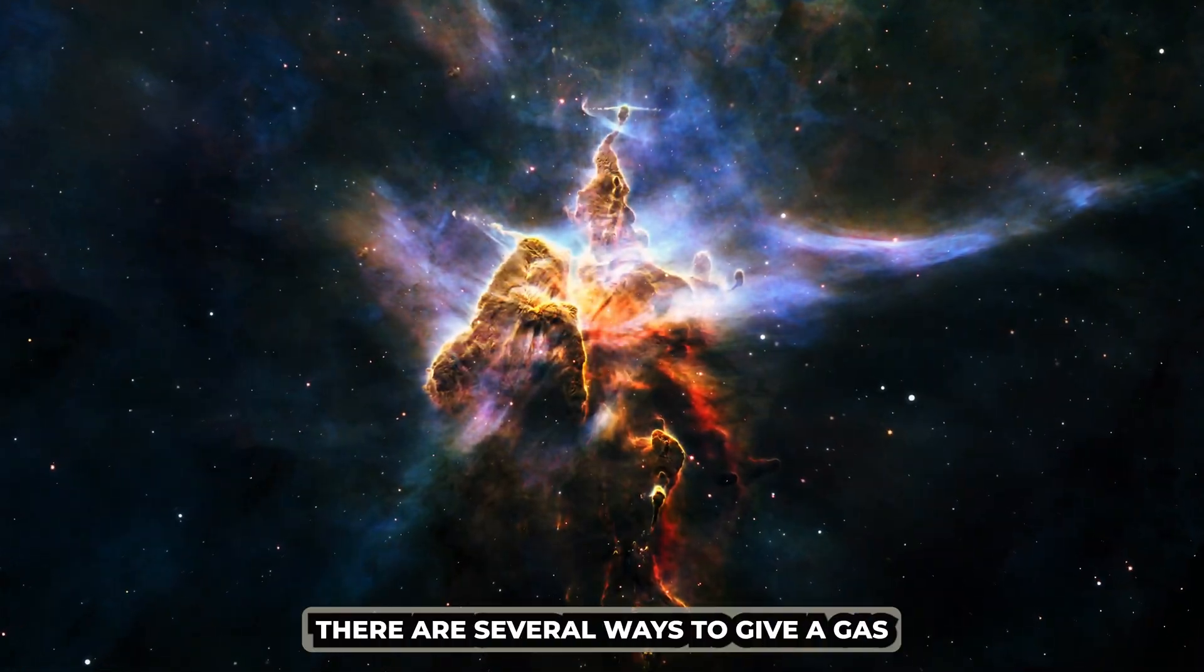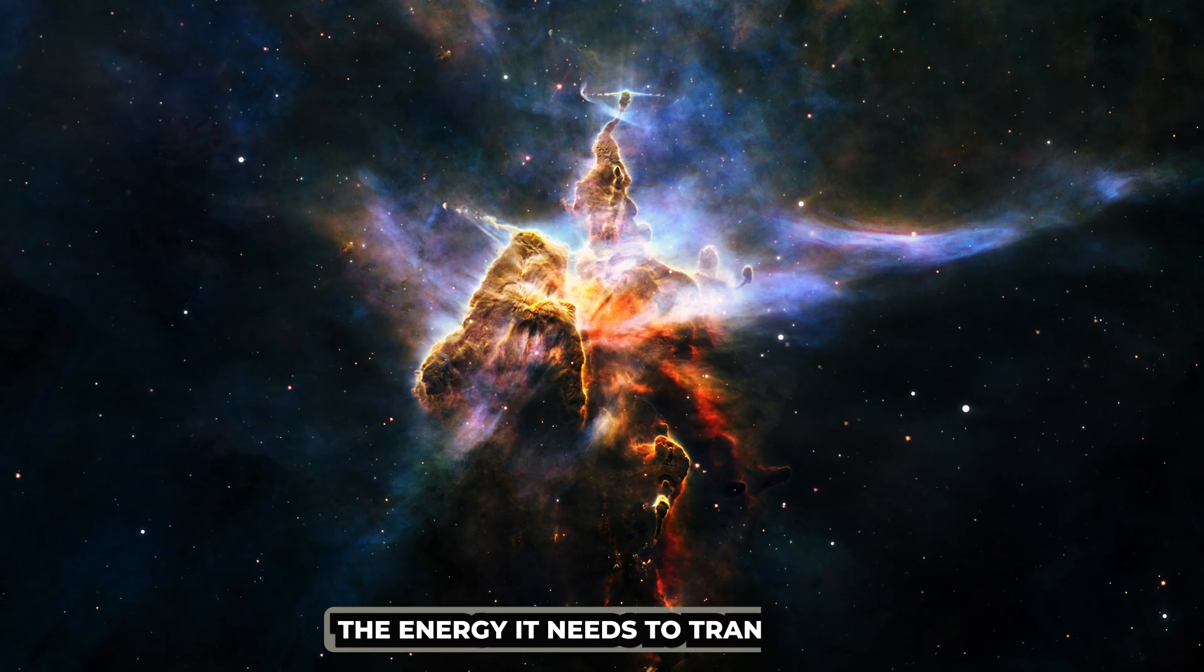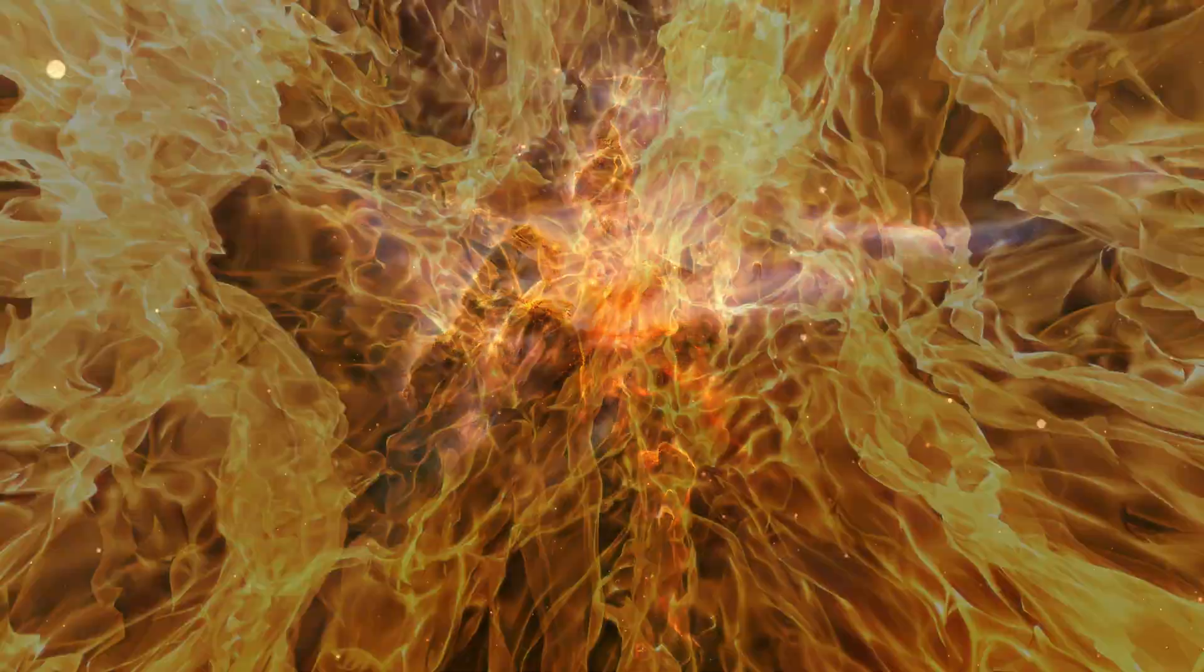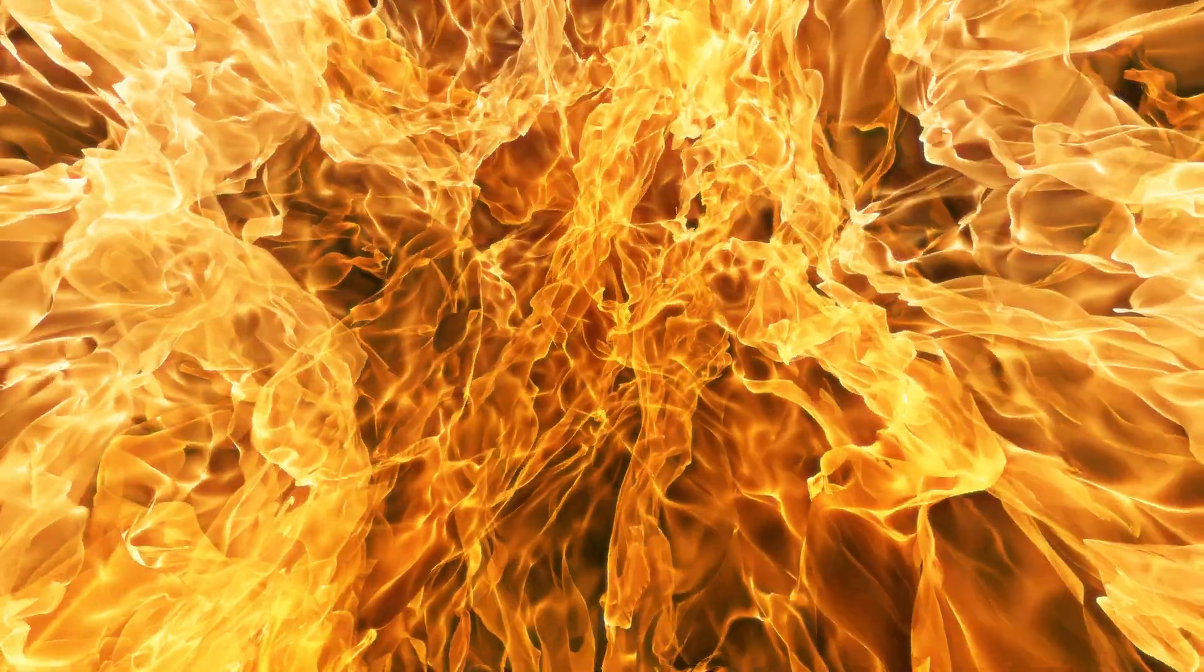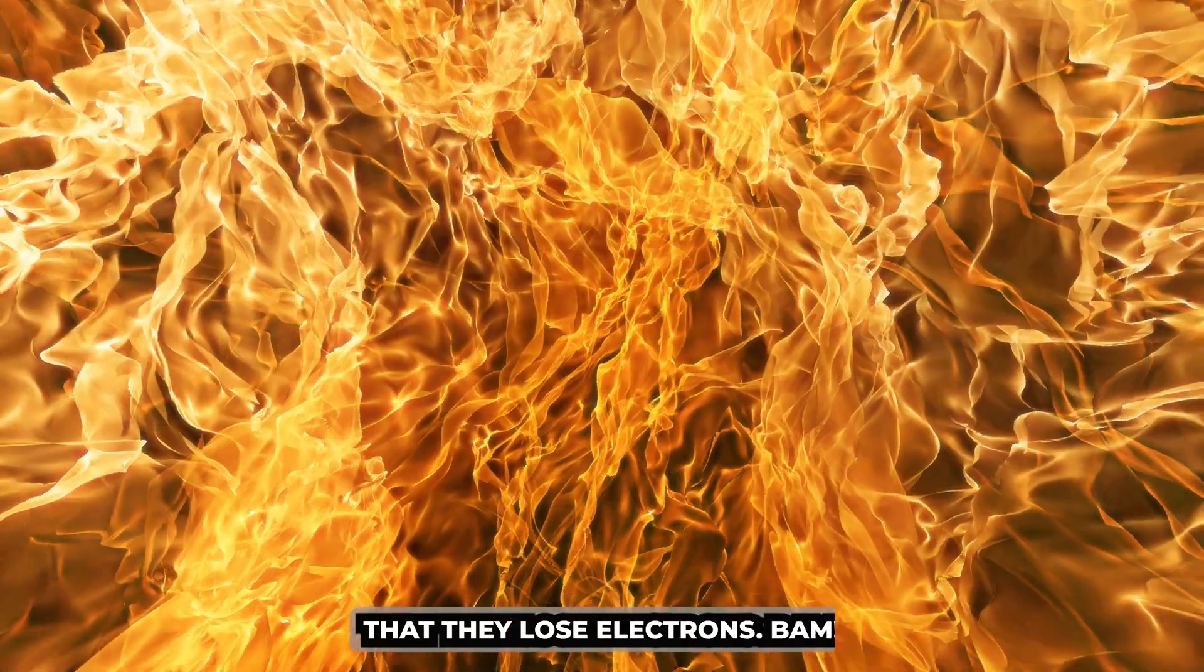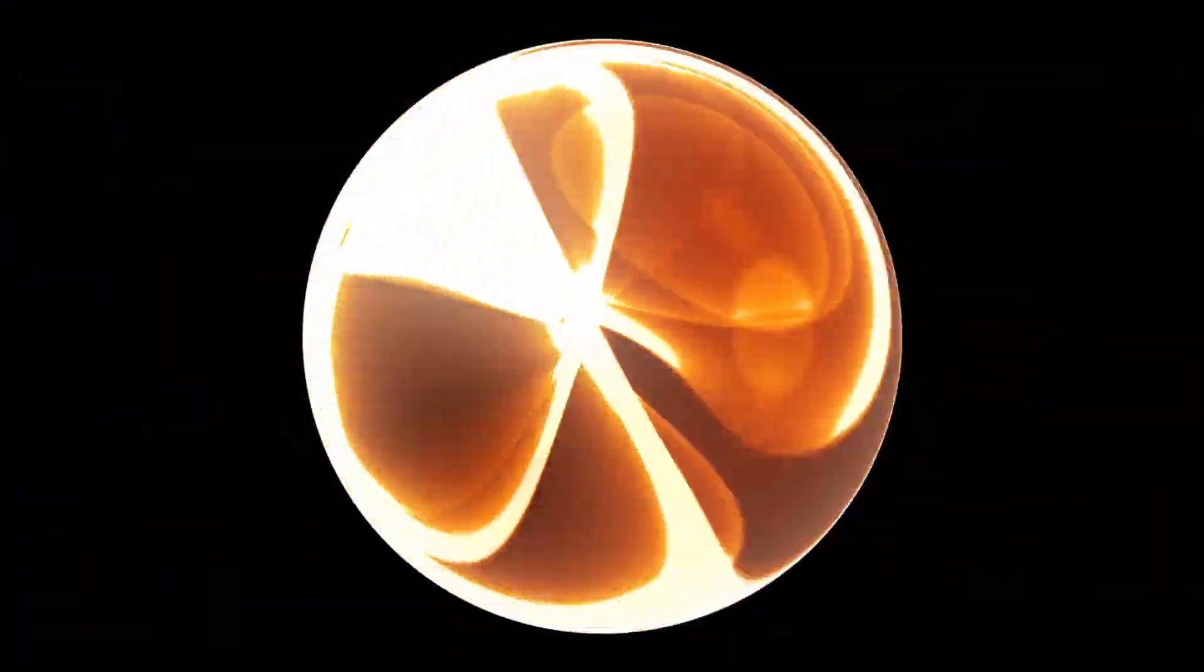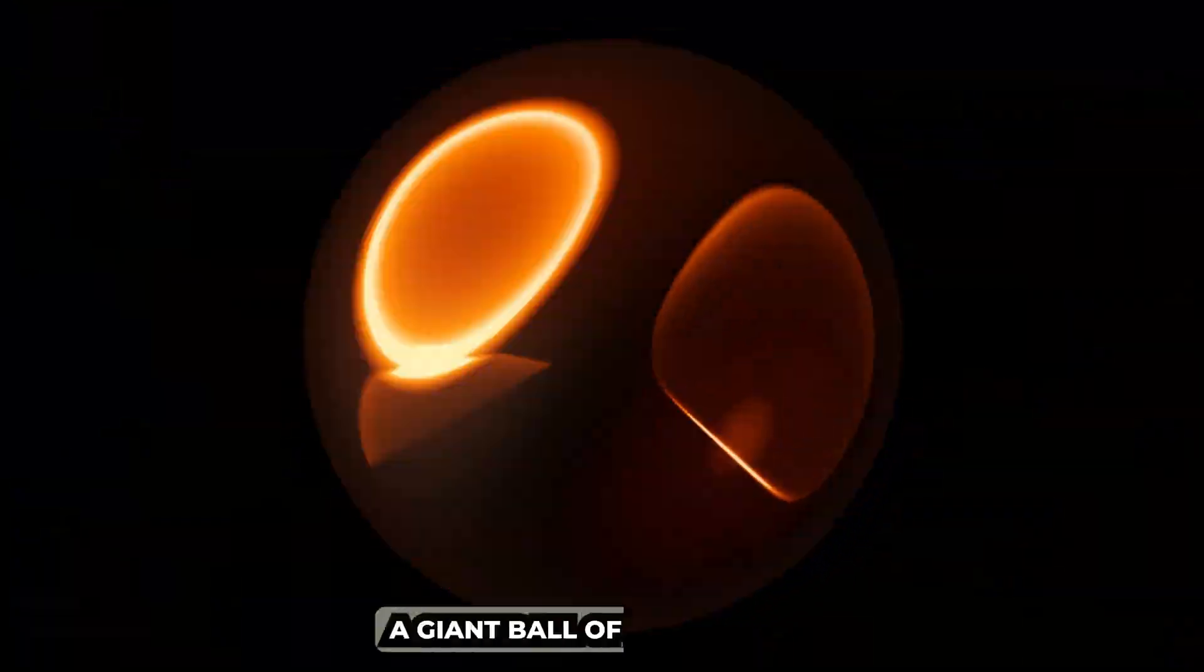But how does this mysterious plasma form? Well, there are several ways to give a gas the energy it needs to transform. First, heat. If we heat a gas enough, its atoms will collide so hard that they lose electrons. Bam! Instant plasma. Think of the sun, a giant ball of hot plasma.